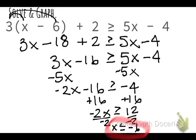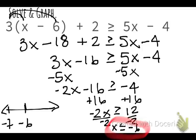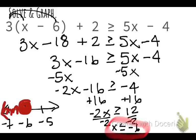I flipped the inequality because I divided by negative 2. To graph: I'll put negative 6 in the middle and pick numbers to the left and right. Because it's 'less than or equal to,' negative 6 is a solution — so I use a closed circle. With the variable on the left, values less than negative 6 are found to the left, so I shade to the left. That's my final answer with a graph.